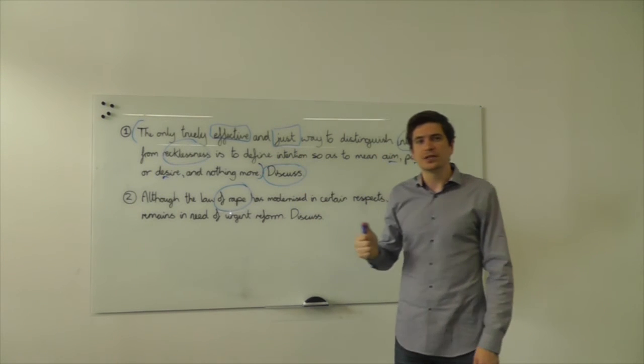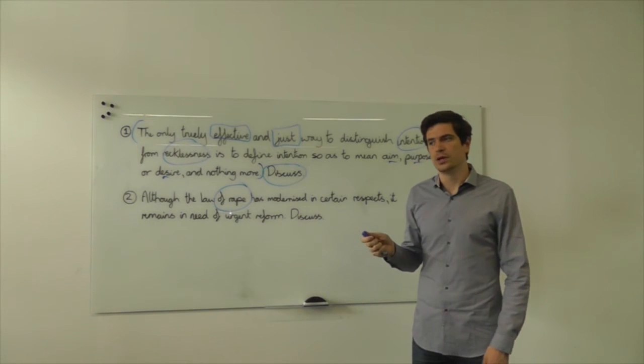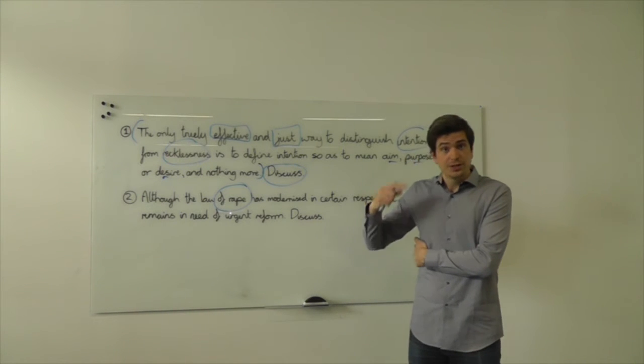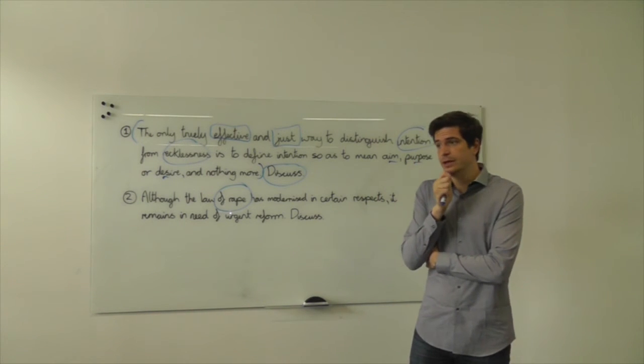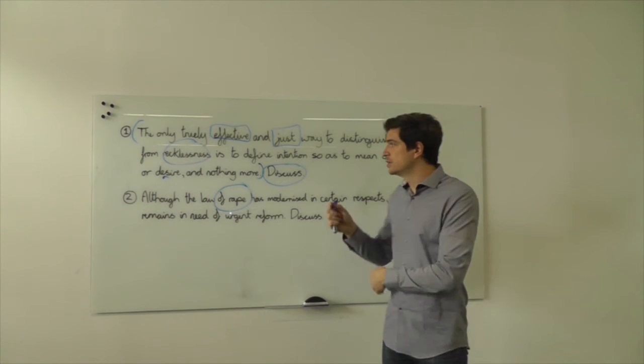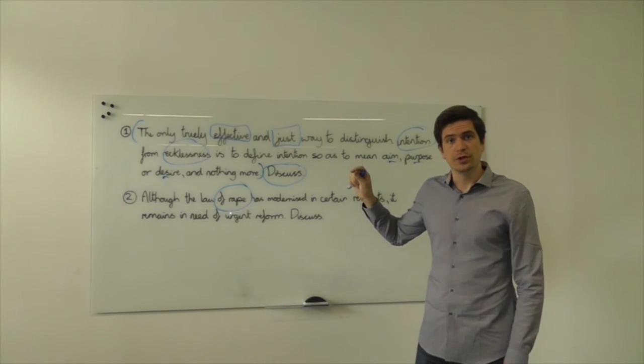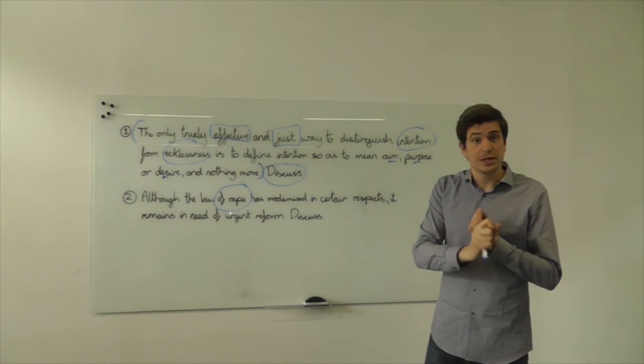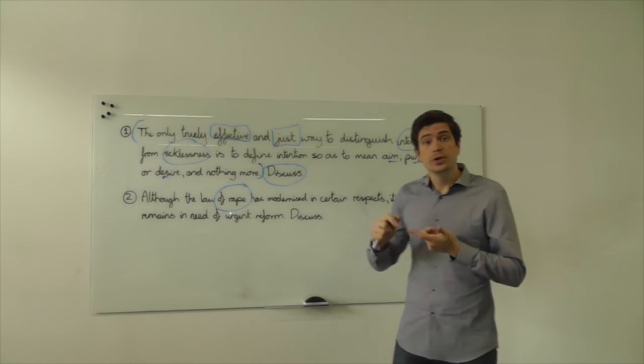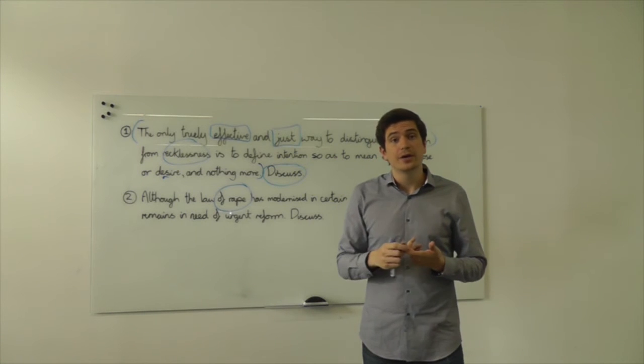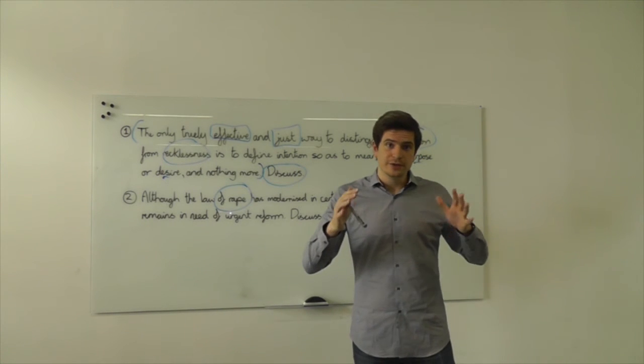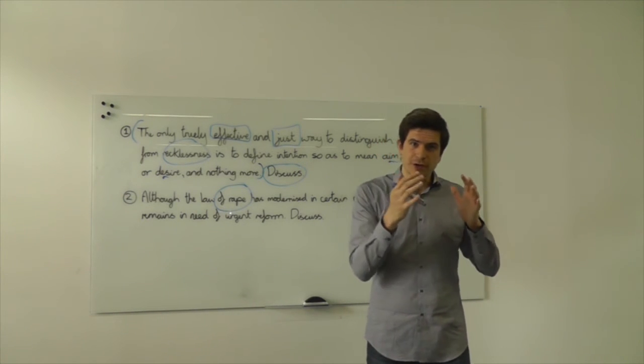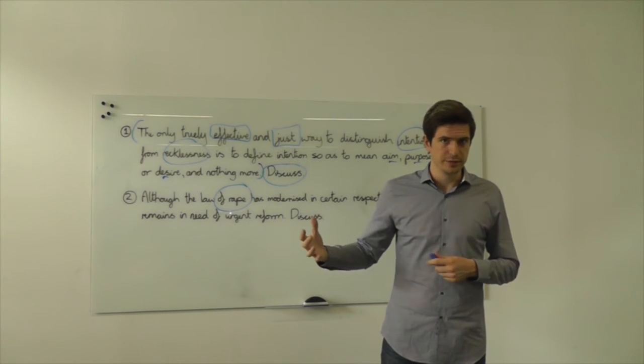in terms of things being just, that's much more debatable because, yes, there have been academics, and this is where some of your journal reading can come in, there have been a number of academics that have argued that just direct intention should be required. We see that sometimes in relation to inchoate offences and attempts liability in particular. We also see that sometimes in debates about the mens rea of murder, that actually if you want the most serious crime it should be a direct intention only, not including oblique intention.